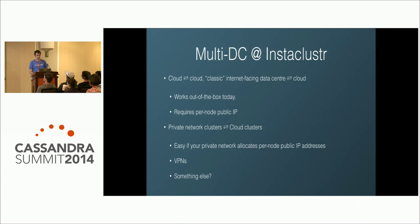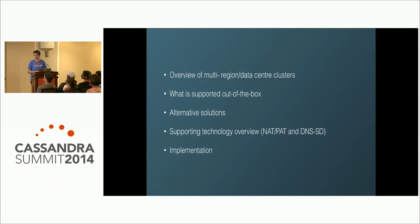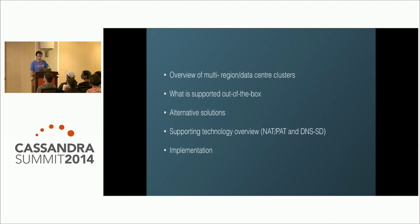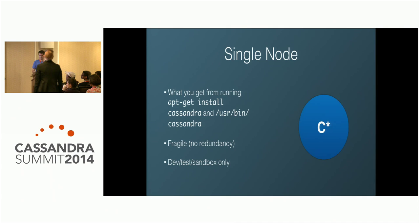Some solutions include VPNs, but we've been exploring something else. This is an experimental concept in private beta — not yet used in production — using network address translation and DNS service discovery for node discovery and connectivity. Today I'll give a quick recap of current multi-DC support in Cassandra, run through alternate solutions we looked at, give a brief overview of NAT and DNS SD, and then a high-level look at our implementation.